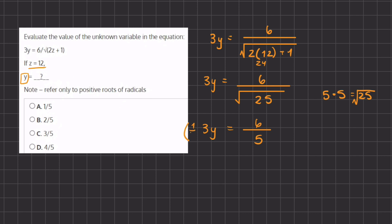So we are going to multiply by a third on both sides. And so now we have y equals 6 divided by 5 times 3, which gives us 15.